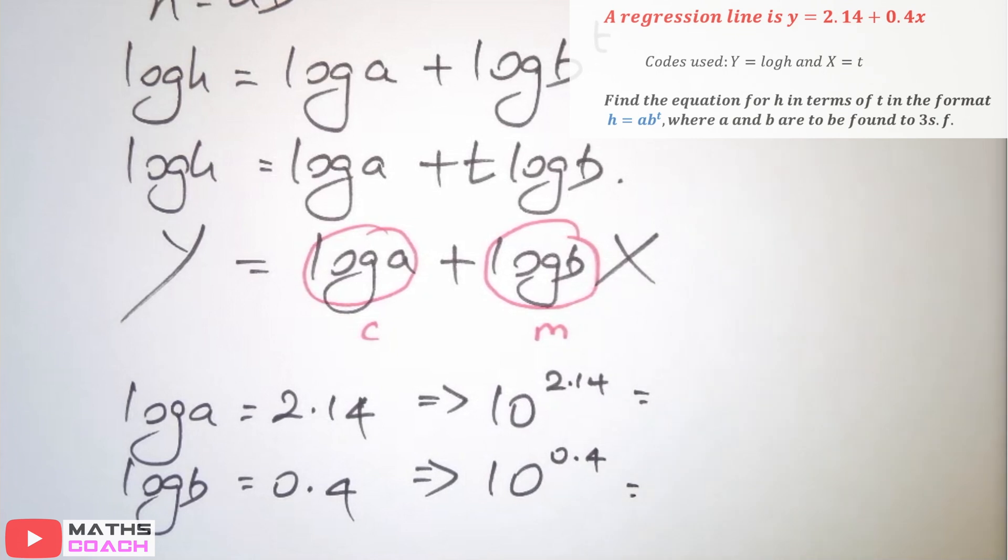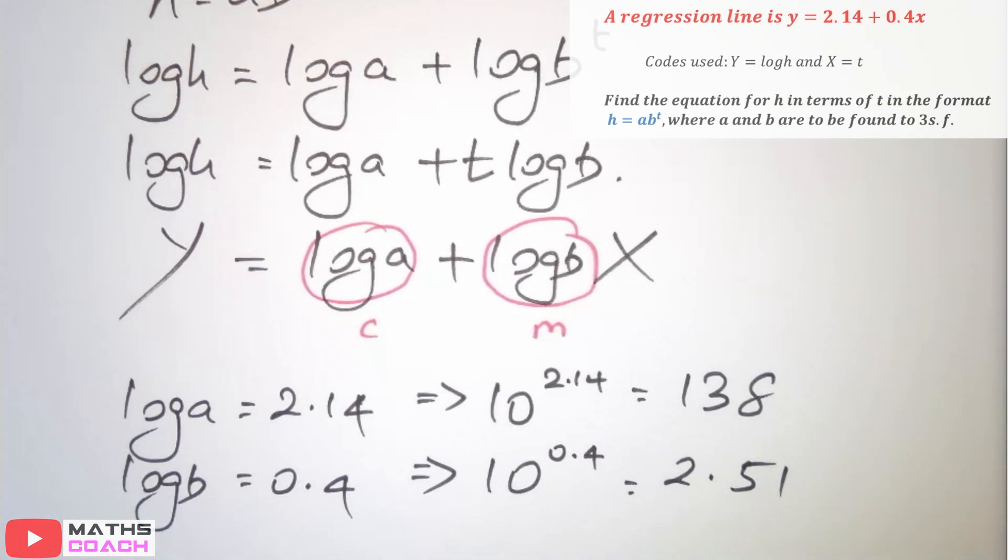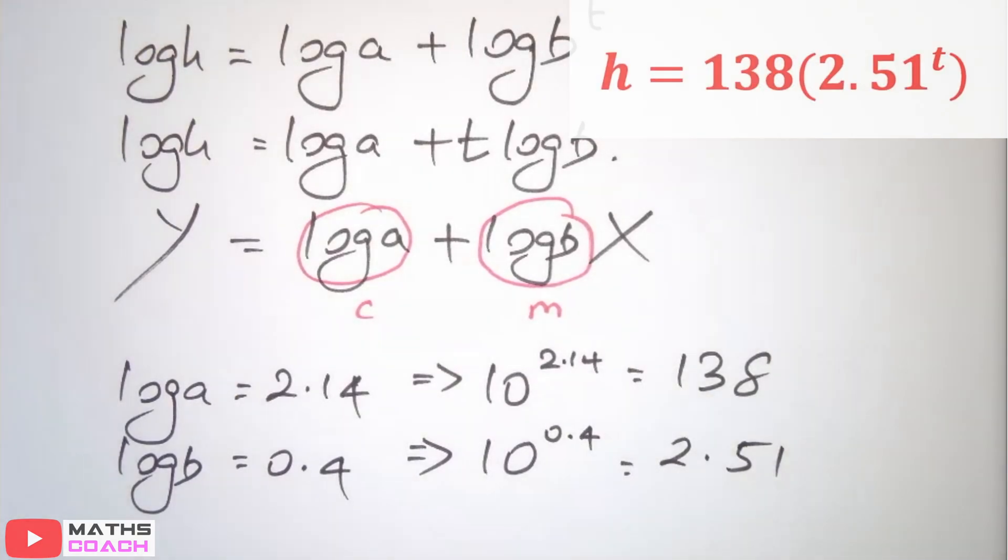If you work those out, you would get 10 to power 2.14 as 138, so 3SF, and 10 to power 0.4 as 2.51. So, when we have to put that as a function, h equals a, b, t, t, we can then write h equals 138 times 2.51 to power t.